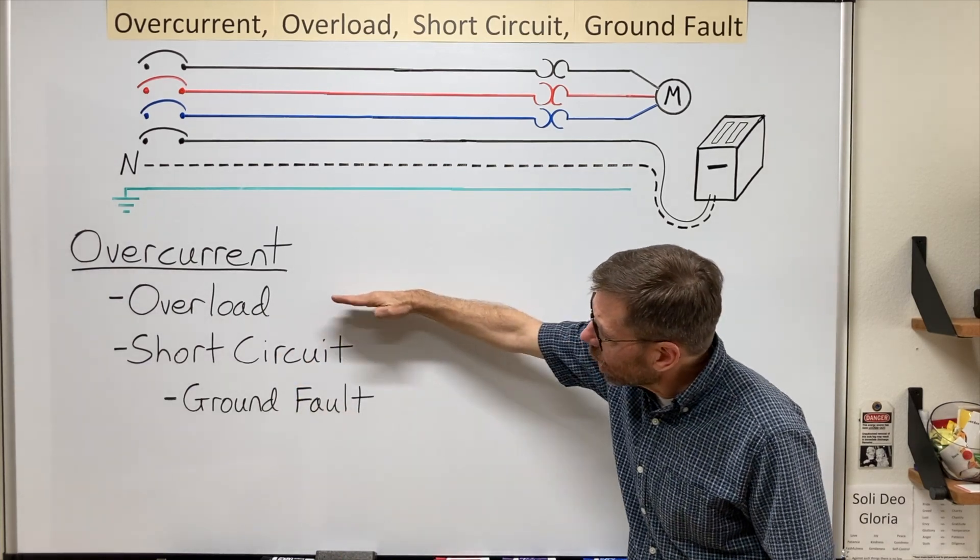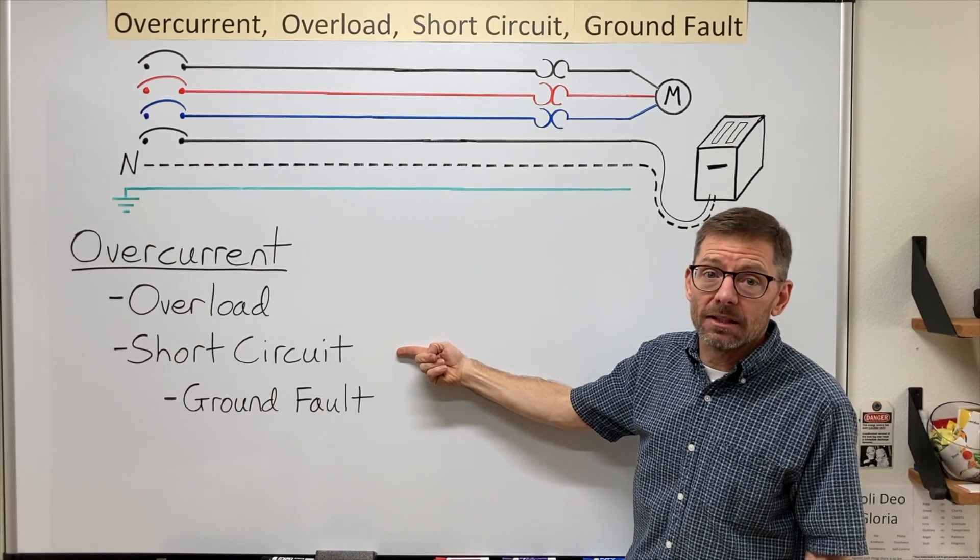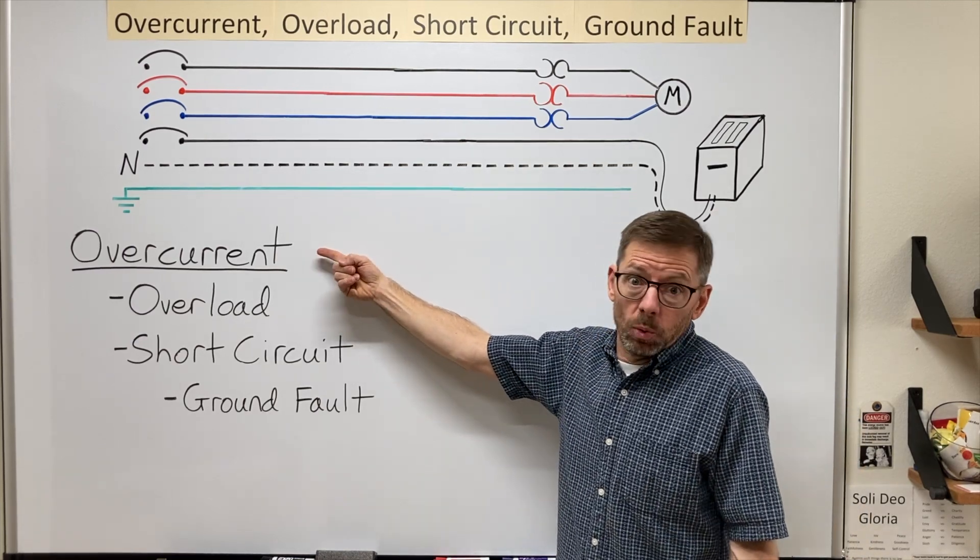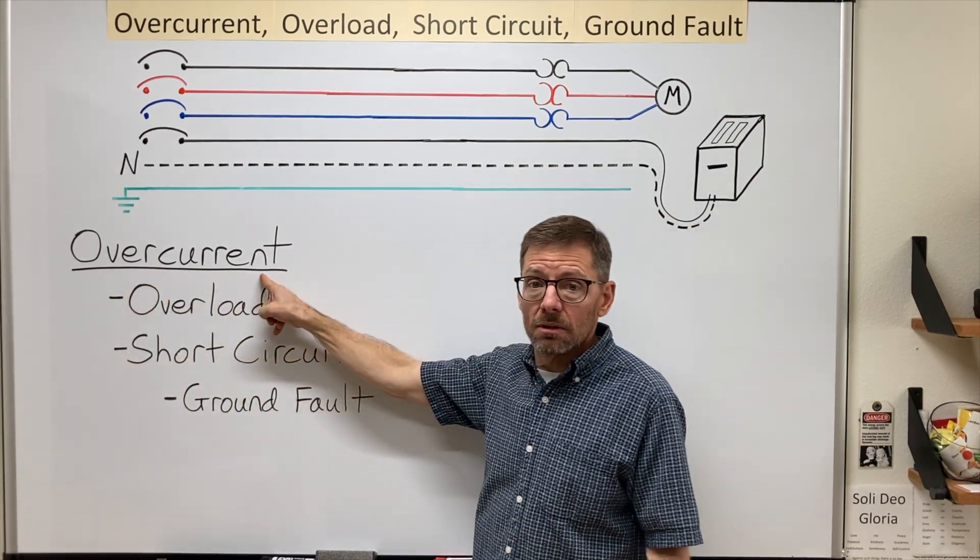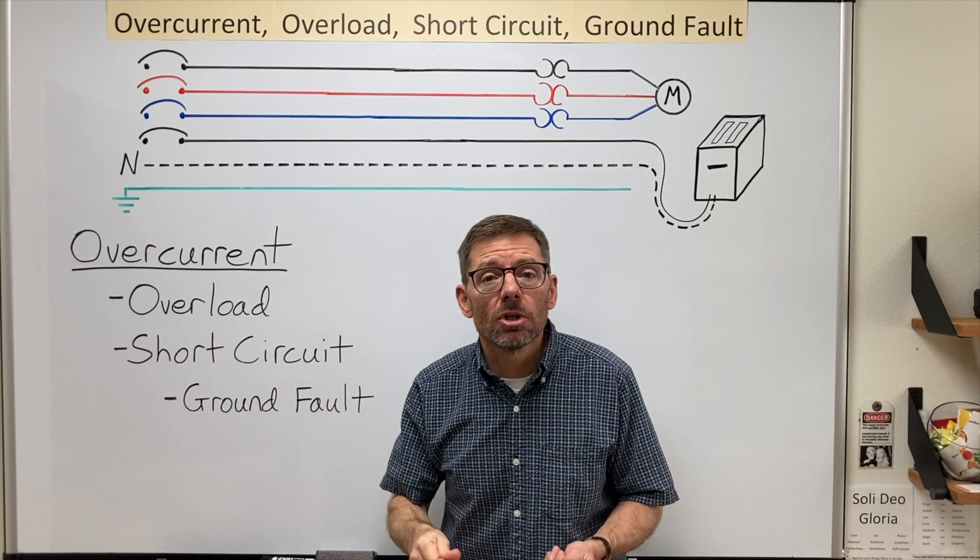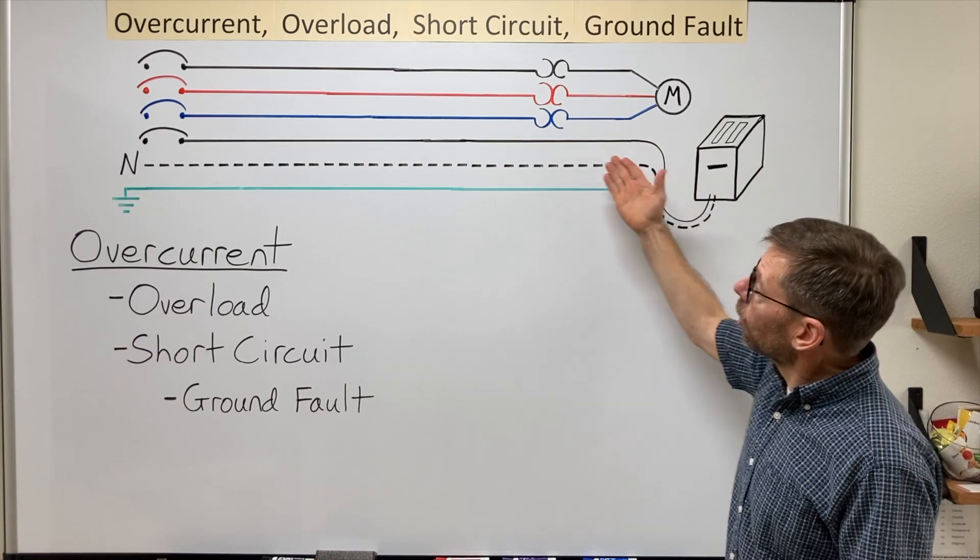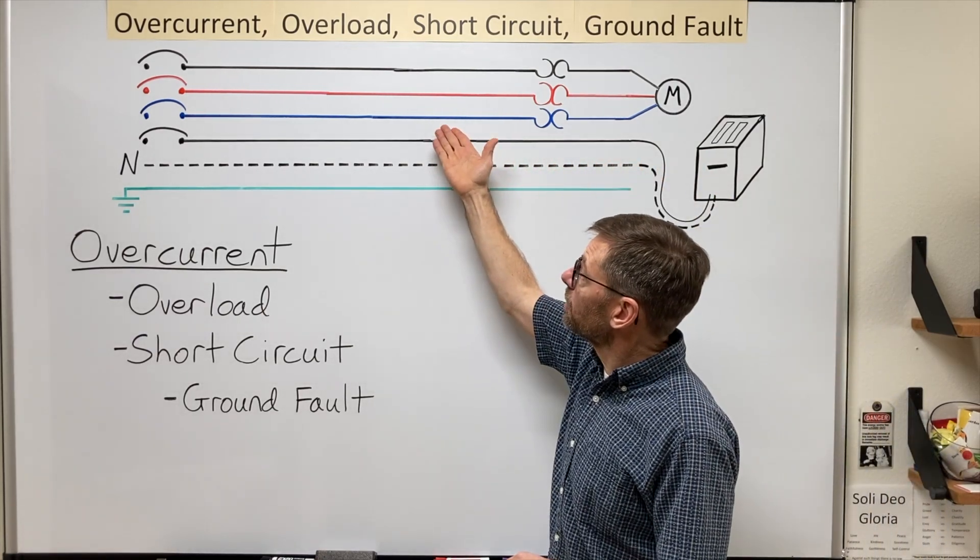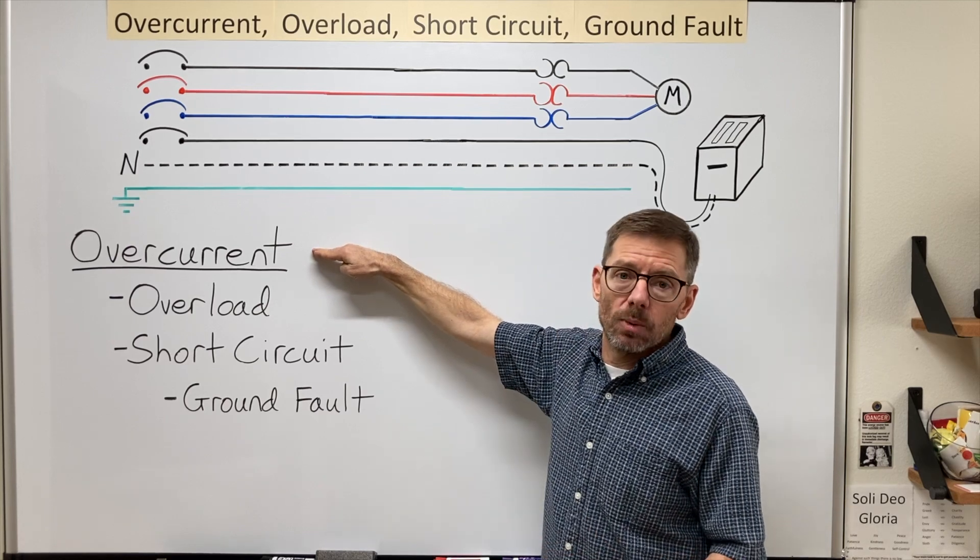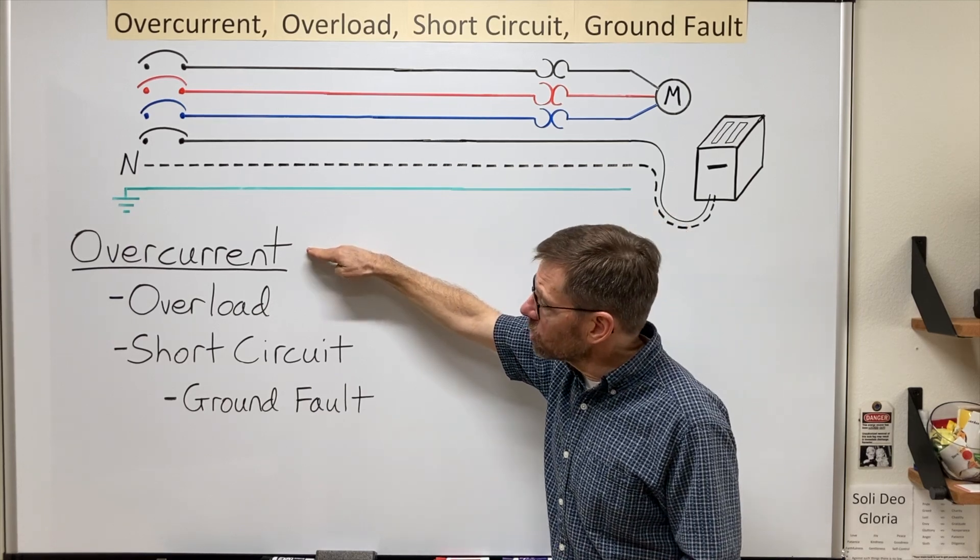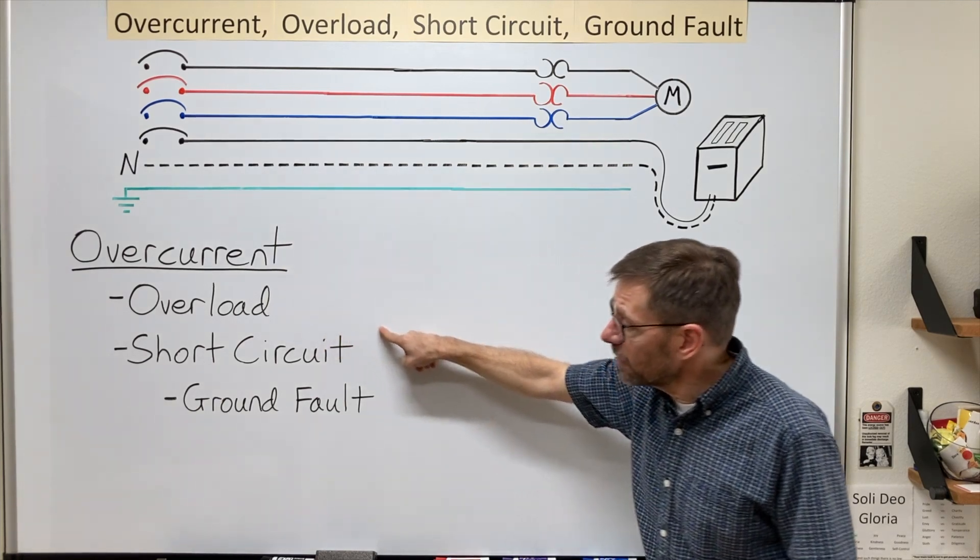Now three of these are defined in the NEC, but short circuit is not. Let's just start with overcurrent. We'll break apart the word: too much current. Whenever we have a situation where we have more current than a piece of equipment is rated for or than the ampacity of a particular conductor, we have an overcurrent situation. And the definition goes on to tell me that these overcurrents can result from any of these three.